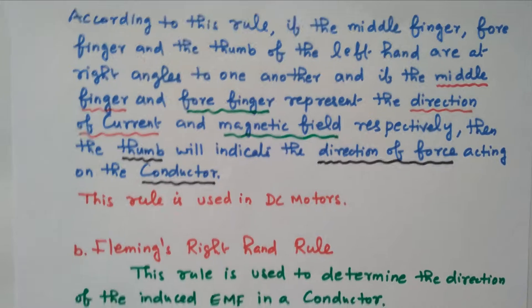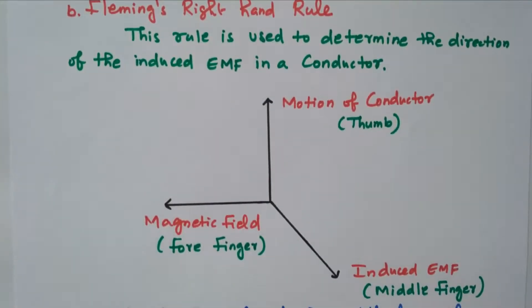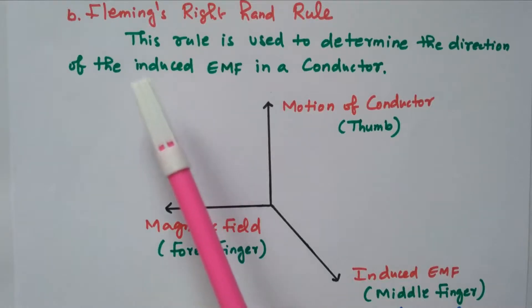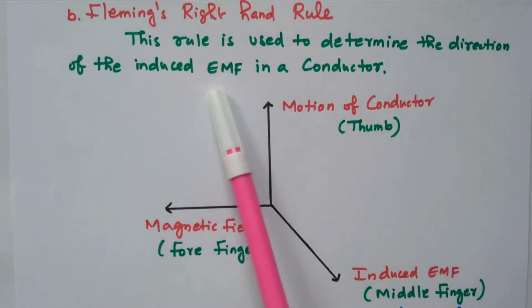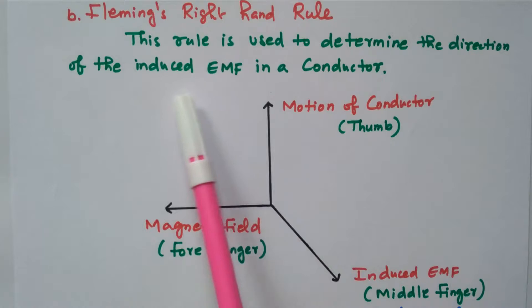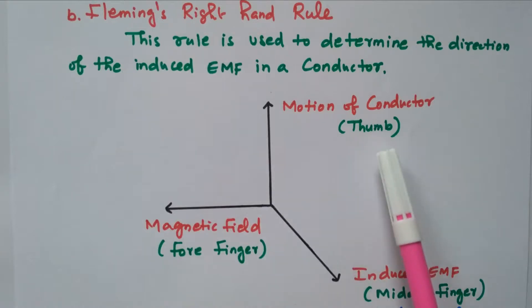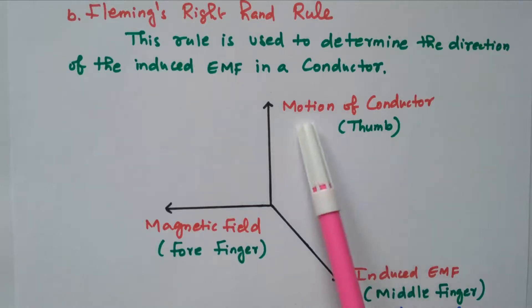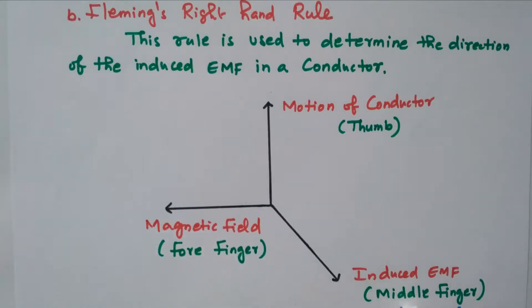Now we will go to Fleming's right-hand rule. This rule is used to determine the direction of induced EMF in a conductor. In the right hand, if you stretch the thumb, forefinger, and middle finger perpendicular to each other, the thumb gives the motion of the conductor, the forefinger gives the magnetic field, and the middle finger gives the induced EMF.